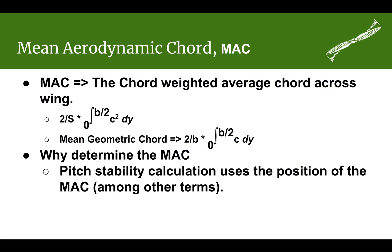We've talked about what the chord is in a previous Aeroterminology video. Quickly, the chord is just the distance from the leading edge of a wing to the trailing edge. The mean aerodynamic chord, as you might have guessed, is kind of an average aerodynamic chord as you go across the wing from root to tip — specifically, it's a chord-weighted average.